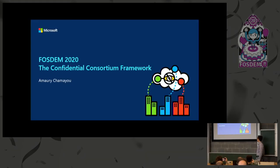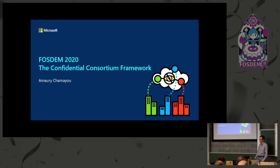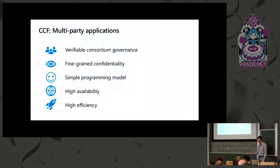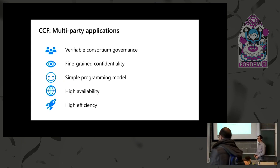Microsoft Research in Cambridge. I'm here to tell you about the Confidential Consortium Framework, which is our project. It's open source on GitHub, so please feel free to check it out. What we set out to do is build a framework to make it easy for people to construct multi-party applications with good guarantees.